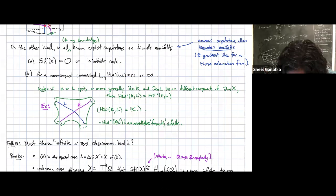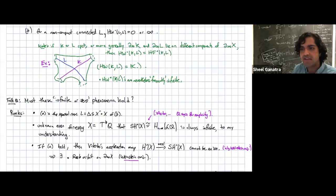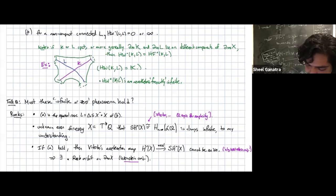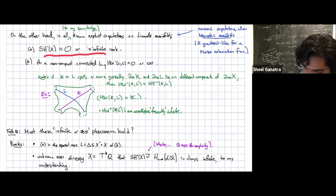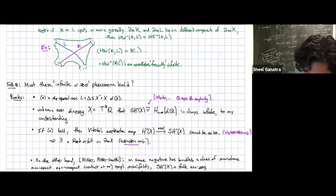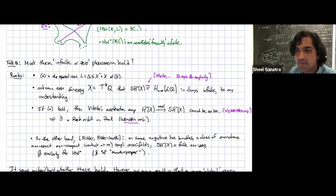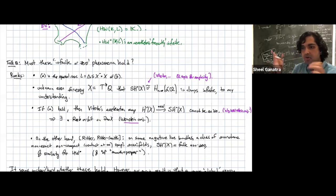Here's an example: you look at the four-punctured sphere, and two different Lagrangians going between different boundary punctures — you see no interesting Reeb chords appearing, so wrapped Floer homology is one-dimensional. So things could be finite. But nevertheless, these wrapped Floer homology groups are frequently infinite. It's an old folk question which I learned in graduate school: must these infinite-or-zero phenomena hold?